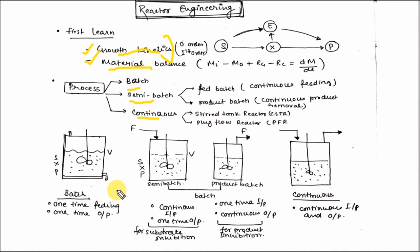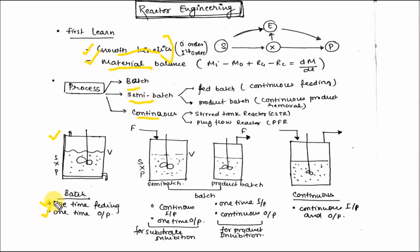In batch processes, there is one-time feeding and one-time output. There is no continuous feeding and no continuous output — only one-time feeding at the beginning of the process and one-time extraction of the output at the end of the process.